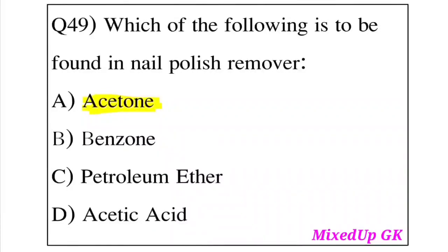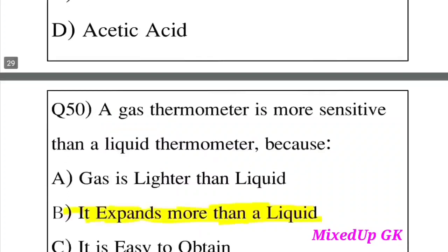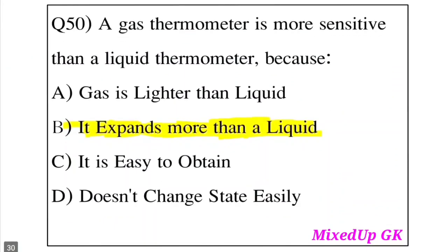Question 50: A gas thermometer is more sensitive than a liquid thermometer because of which reason? Option A: Gas is lighter than liquid. Option B: It expands more than a liquid. Option C: It is easier to obtain. Option D: Does not solidify easily. The answer is Option B, it expands more than a liquid. Gas expands more than liquid, making it more sensitive.